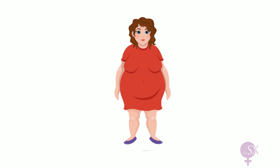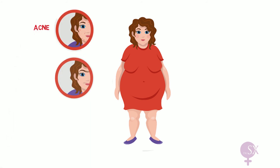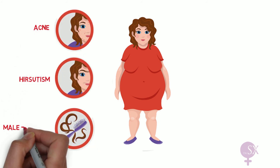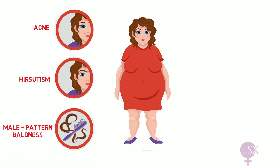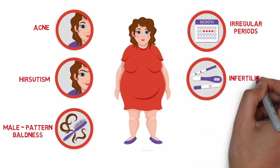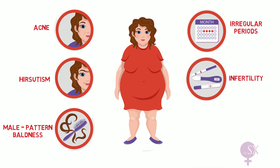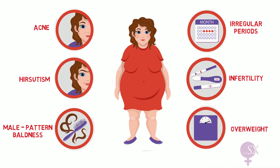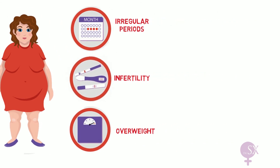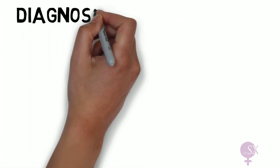A typical PCOS patient may have acne, hirsutism, and male pattern baldness — all features of hyperandrogenism. She may have irregular periods and fertility problems, secondary to problems with ovulation as discussed, and she may also be overweight due to insulin resistance.